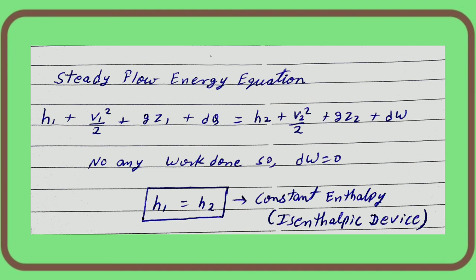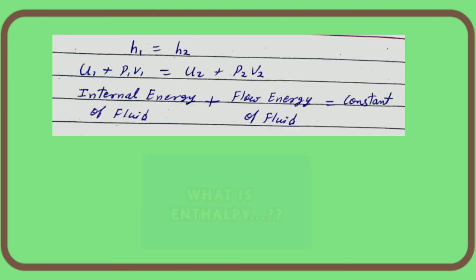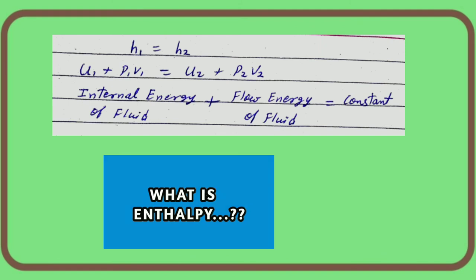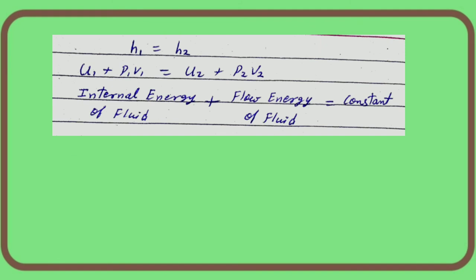Isenthalpic means enthalpy is constant throughout the process. Enthalpy constant means flow energy plus internal energy is going to be constant throughout the throttling process. However, the internal energy alone and the flow energy alone of the fluid are not individually constant — it is the summation of both energies that is constant. That is what the isenthalpic process means.